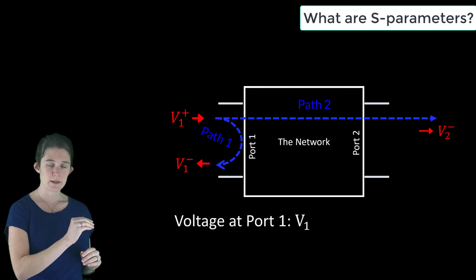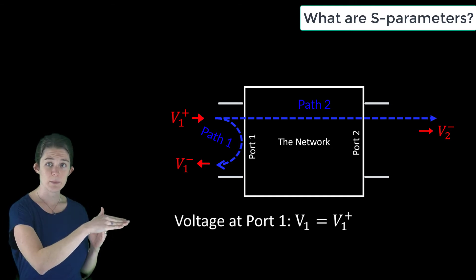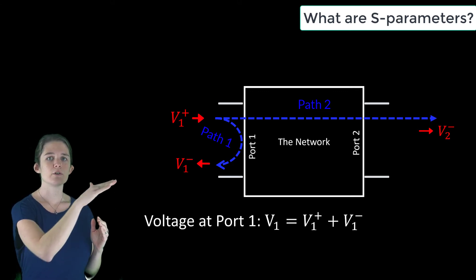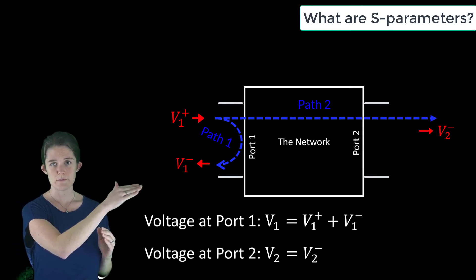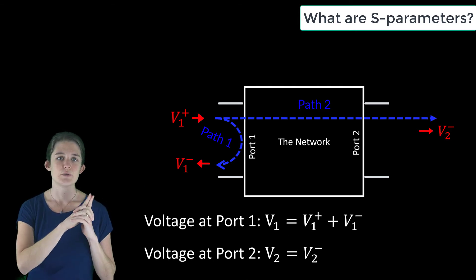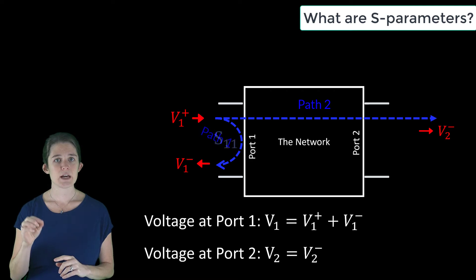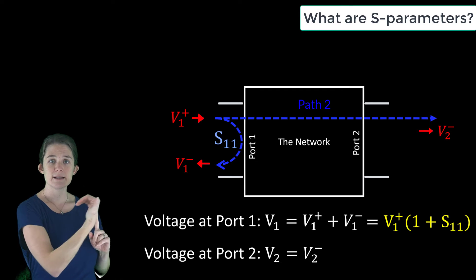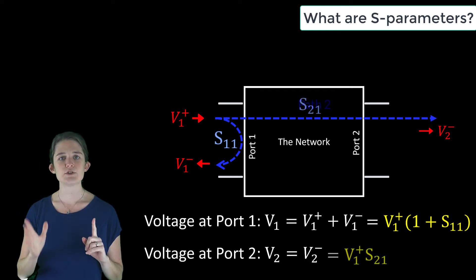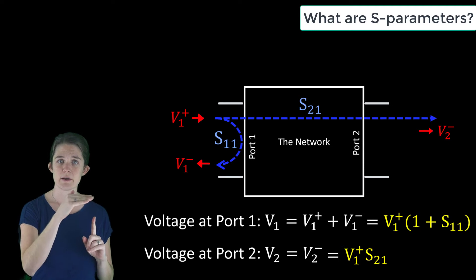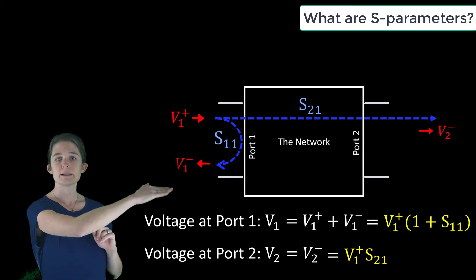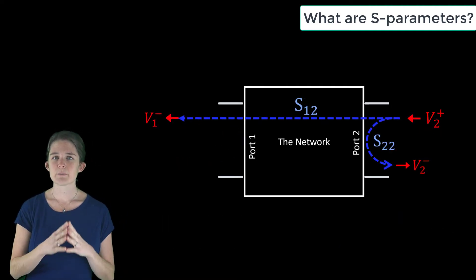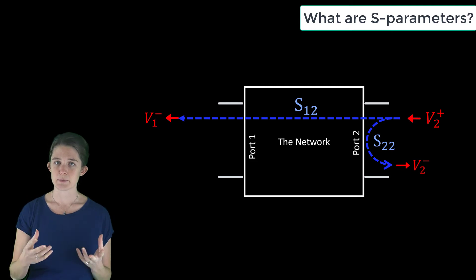The total port voltage at port one equals the sum of the incoming wave v1-plus and the reflected wave v1-minus, while the total voltage at port two equals just the outgoing wave v2-minus. The two paths are described by S11, which indicates the portion of voltage that entered at port one, reflected, and exited at port one, and S21, which indicates the portion that transmitted through and exited at port two. S22 and S12 refer to the paths traveled by energy input at port two.